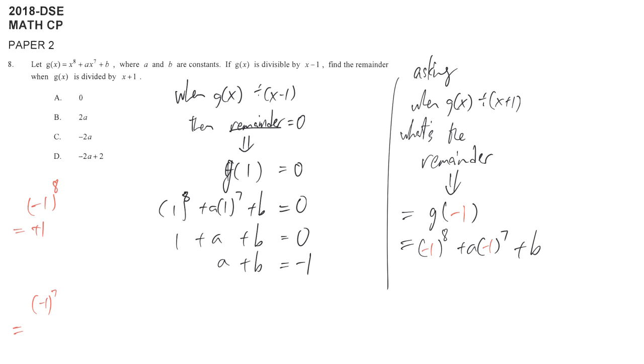And negative 1 power 7 - someone is single so it's negative. We got negative 1. Just handle this very carefully. Minus a plus b. We want to get these values.